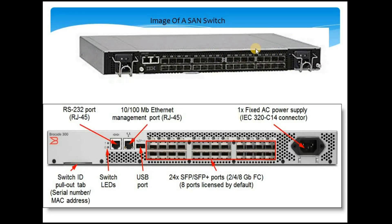This is how a switch looks — here is the overall picture and a more detailed picture of a SAN switch. On the left-hand side, the first port is an RJ45 port, which is used for CLI connection to a local laptop or PC. Next to that we have a management Ethernet port, which is connected to the network switch. We can configure an IP address for this management port and remotely access the switch to do various admin operations.